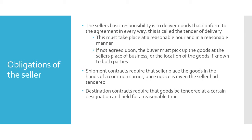There are two types of contracts. Shipment contracts essentially require the seller to hire a shipper to deliver the goods, and in this case the seller must also give notice that the goods have been shipped. Destination contracts mean the goods are made available at a certain place for a reasonable period of time — the seller has to make the goods available at that location for a reasonable period of time.